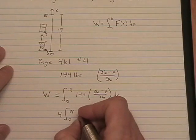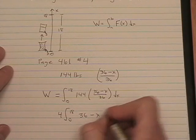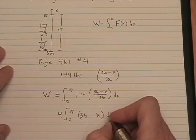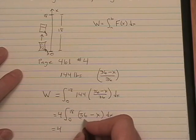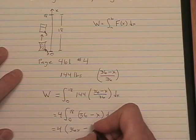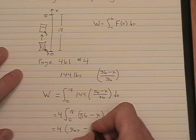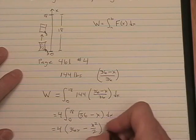Leaving me with a relatively simple integral of 36 minus x. The antiderivative of 36 is 36x. And the antiderivative of x is x squared over 2.